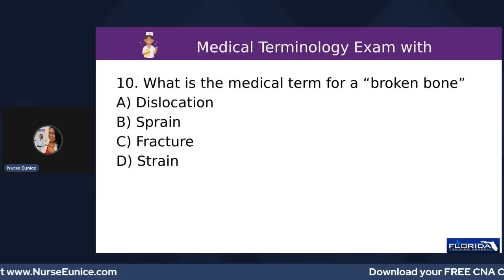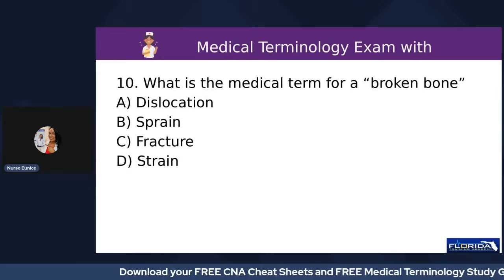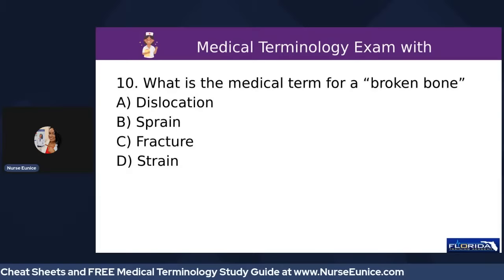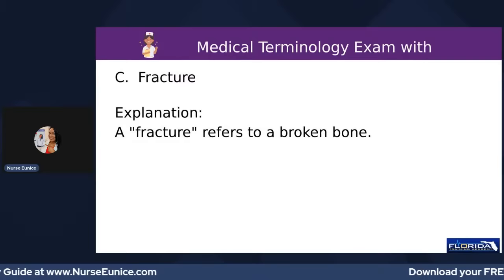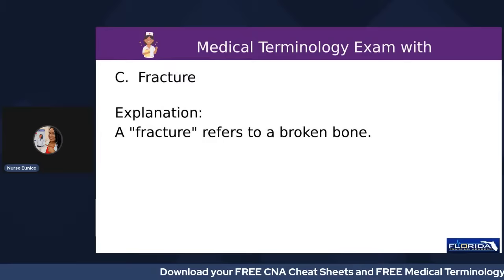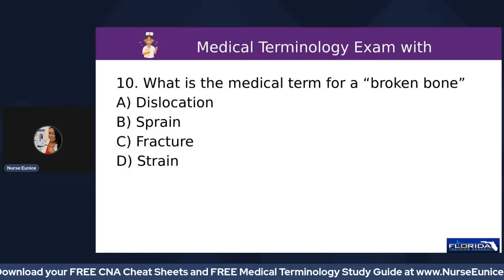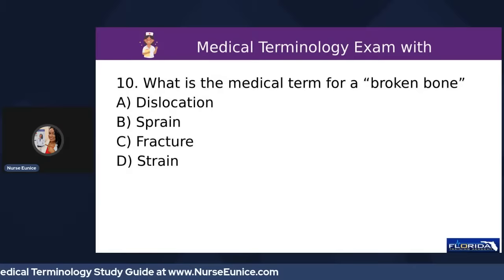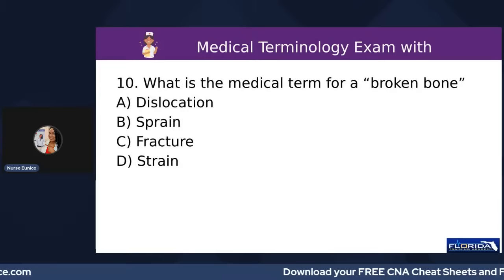Number ten: what is the medical term for a broken bone? A) dislocation, B) sprain, C) fracture, or D) strain. Fracture refers to a broken bone. A dislocation is a separation at the joint. A sprain refers to swelling of a ligament. A strain is the pulling of a muscle. Fractures are when something is actually broken or fractured.